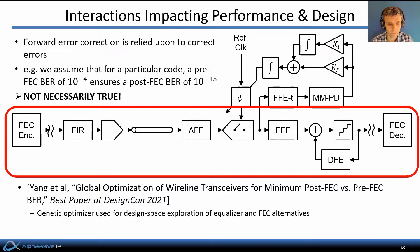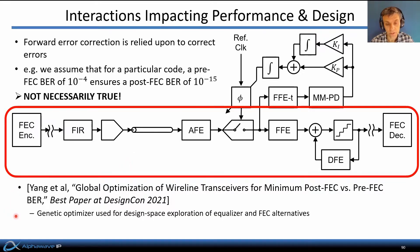Forward error correction is increasingly relied on to correct the few errors that arise in wireline links. We usually rely on these under what we call the pre-FEC error paradigm — that is, for a particular code, we might assume that a pre-FEC error rate of 10^-4 can be corrected by the error control code to provide a post-FEC error rate of say 10^-15. But the truth is that's not necessarily true. The amount of error correction the code provides depends on the patterns of errors that arise in the underlying link. In this paper, we look at what choices can be made in the optimization of the equalizer circuits — the transmit equalizer and receive equalizer — that cause bit errors to arise only in patterns correctable by the particular type of code used. A genetic optimizer is used for design space exploration of alternatives.